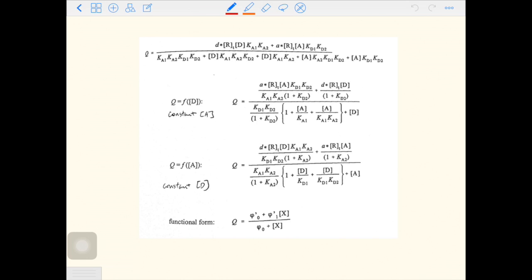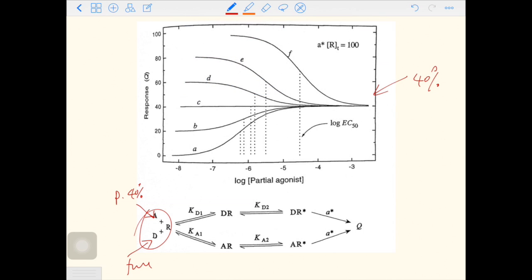Upon seeing this, the first three letters that come into your mind are WTF. However, it's in this simple form. In this graph, you have ABCDEF six curves, and they have different initial concentrations of full agonist.